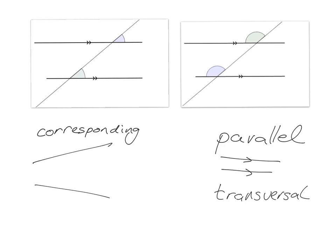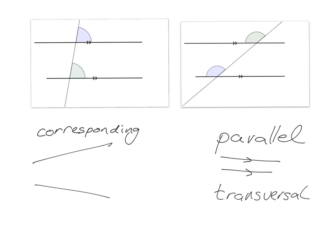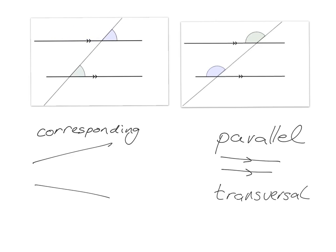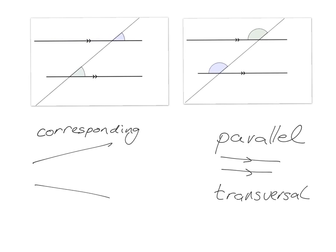Let's have a look at these two corresponding angles, the blue and the green one. Have a look at what happens as we change where the transversal lies. As this transversal moves, the blue gets bigger and as the blue gets bigger, so the green gets bigger; as the green gets smaller, so the blue gets smaller. These two are also corresponding, and these two are also corresponding.